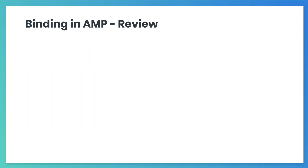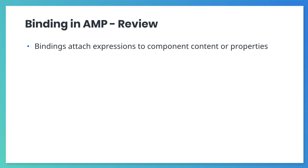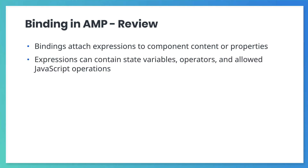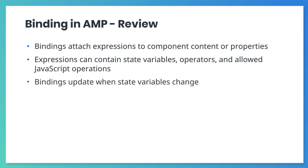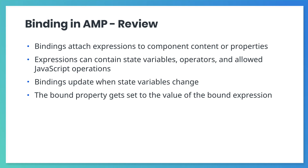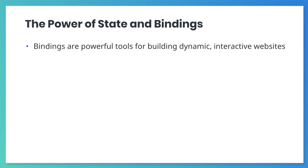Let's review what we've learned about AMP bindings. Bindings let us change the content of components or the values of attributes whenever state variables are updated. Bound properties are set to snippets of JavaScript called expressions. Binding expressions may contain one or more state variables, operators, and allowed JavaScript operations. When state variables change in response to user interaction, the binding expressions are re-evaluated, and the result of these expressions are set as the new values of the bound attributes. Bindings are powerful tools for building dynamic, interactive websites in AMP and beyond.